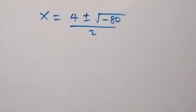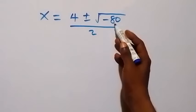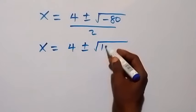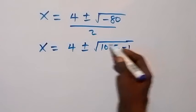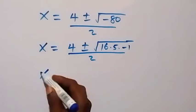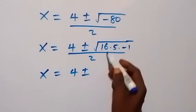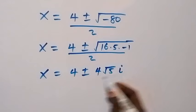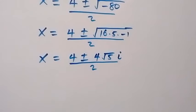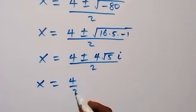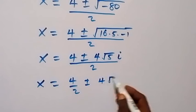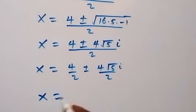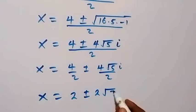We can factor minus 80 as 16 times 5 times minus 1. So x equals to 4 plus or minus square root of (16 times 5 times minus 1), over 2. Taking the square root, root 16 is 4, root 5 stays as root 5, and root of minus 1 is i. We can then separate this as x equals to 4 over 2 plus or minus 4 root 5 i over 2, which simplifies to x equals to 2 plus or minus 2 root 5 i.